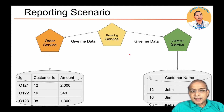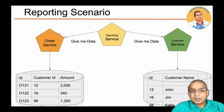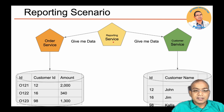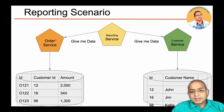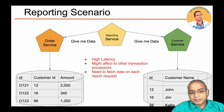Now let's think about a reporting scenario. Assume there is a reporting service that requires data from both services — perhaps 100 million records. If the reporting service asks this data directly from the order service, it might affect the performance of the order service, because other requests are coming in at the same time. This is a high-latency problem, it affects other transactions, and it needs to fetch data on each report request. If 10 managers request this report at 10 different times, we need to do this operation 10 times.